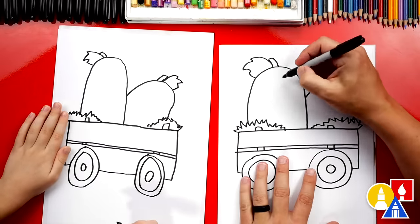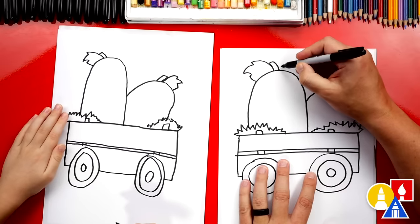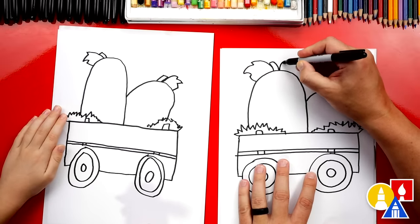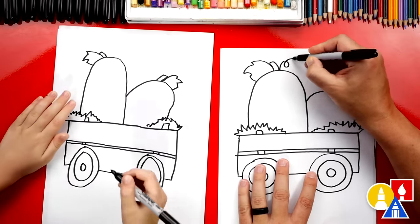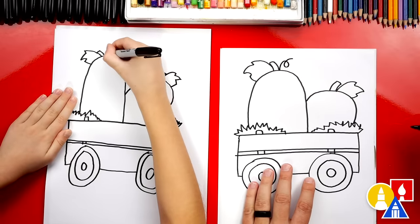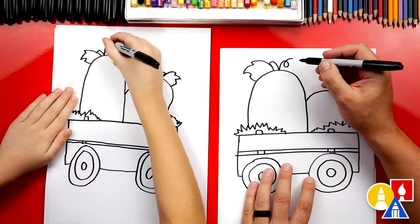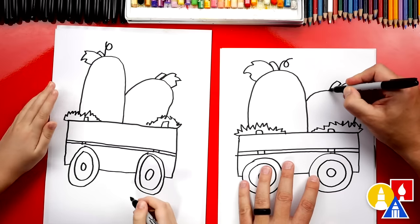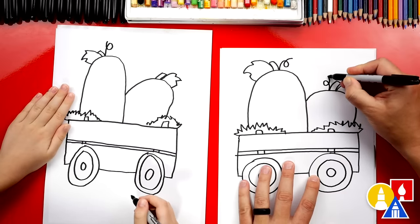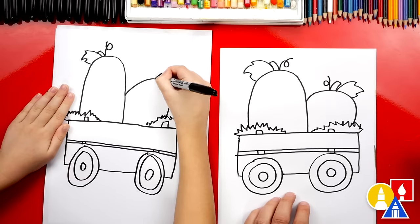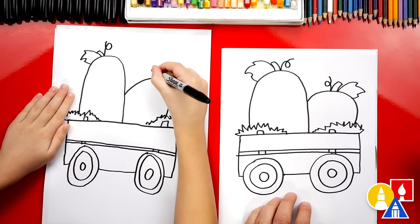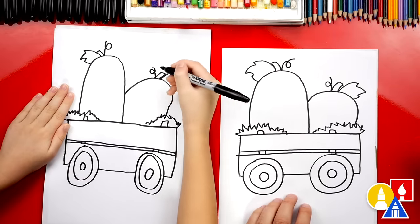Now sometimes the little vines are still stuck to the top of our pumpkin. Let's draw a little curl like that with a little loop in the middle. Loop around. And then we're gonna do the same thing.